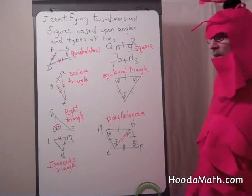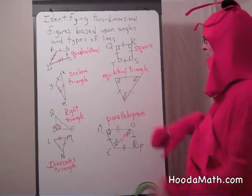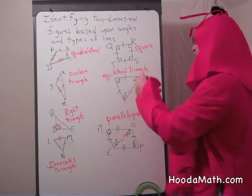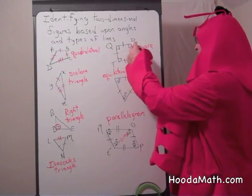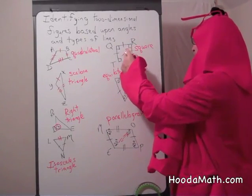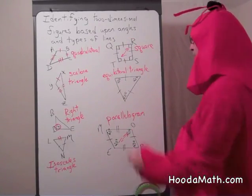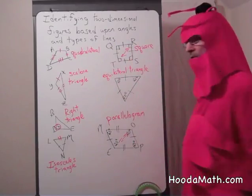A square is also a parallelogram because its opposite sides are equal. And opposite angles are equal, making these lines, the opposite angles are equal, making these sides parallel. This angle also equals the same.